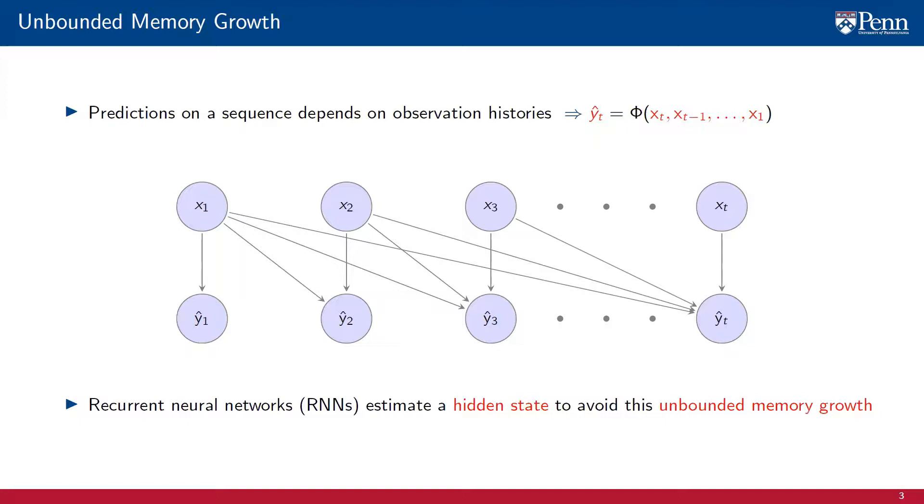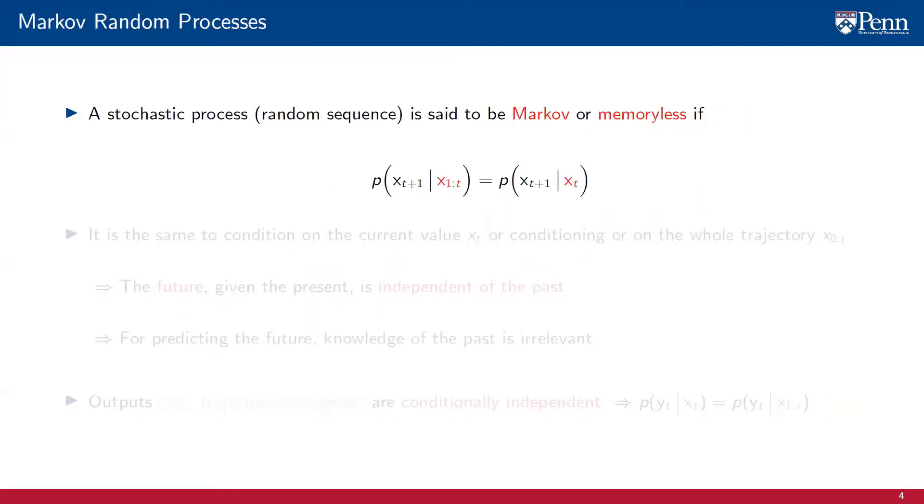Recurrent neural networks resort to the estimation of a hidden state to avoid this unbounded memory growth. Before we talk about RNNs, we need to talk about memory in stochastic processes. This will play an important role in motivating and understanding the architecture.